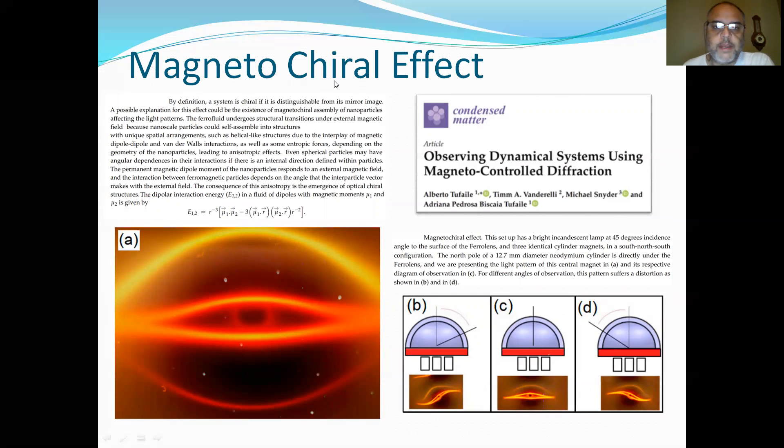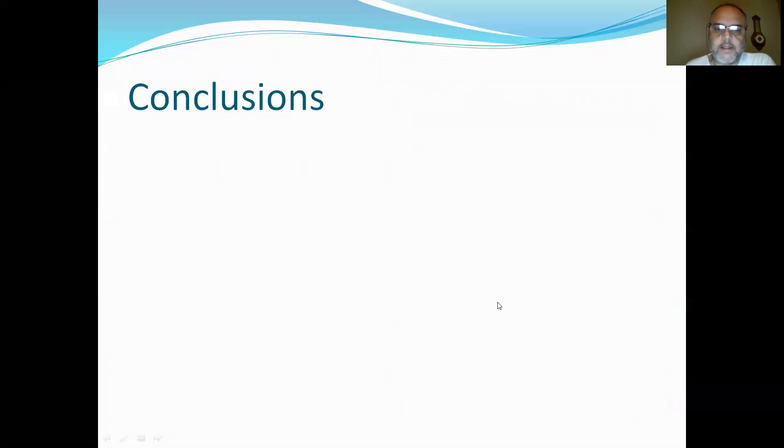We also observed the magneto chiral effect described in this paper. And we give the explanation for the effect using the idea of the existence of magneto chiral assembly of nanoparticles affecting the light patterns. The permanent magnetic dipole moment of the nanoparticles responds to an external magnetic field. And the interaction between ferromagnetic particles depends on the angle that the interparticle vector makes with the external field. The consequence of this anisotropy is the emergence of optical chiral structures. And we can see here some patterns related with this magneto chiral effect.